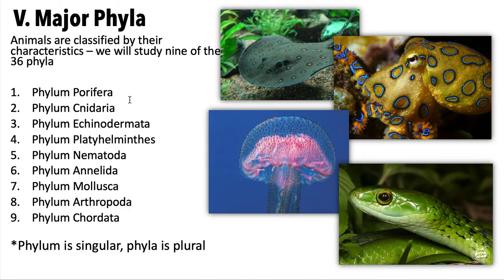In total, there are nine phyla we'll talk about. Within the kingdom Animalia, the next classification level is called phyla — we'll cover the classification levels in more detail in a future set of notes. These are the nine main phyla we'll go over, so you can get an idea of what we'll spend the rest of the semester on after this unit.